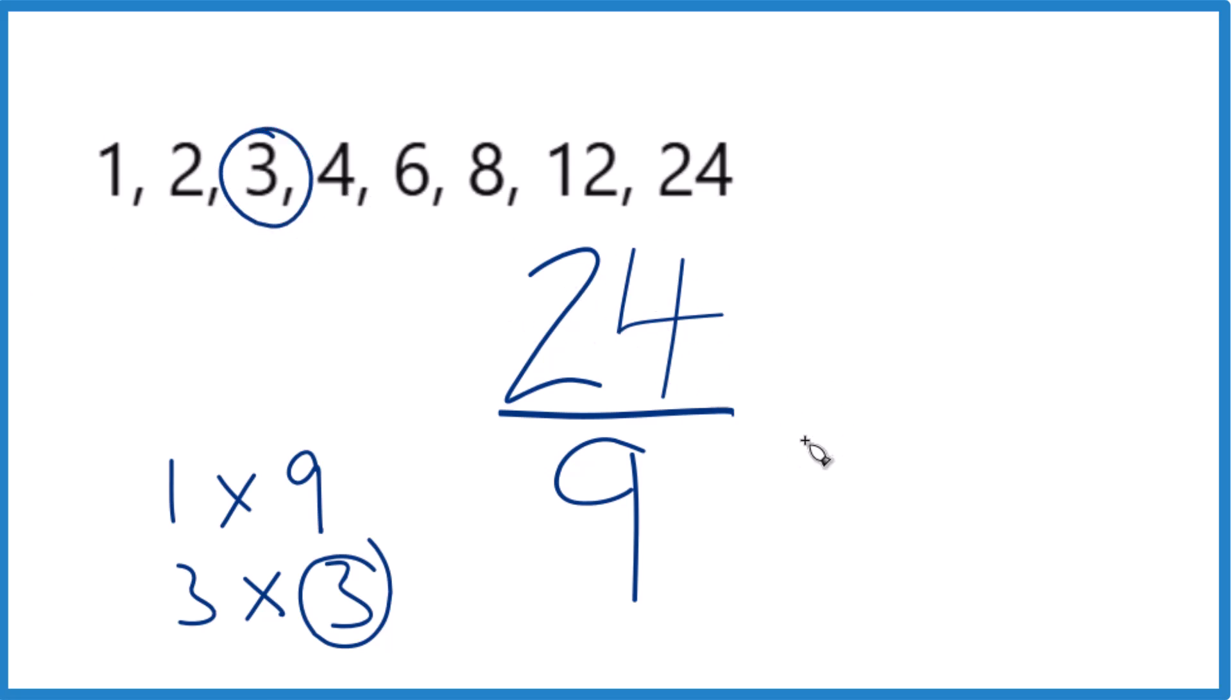So if you divide 24 by 3, you get 8. 8 times 3 is 24. If you divide 9 by 3, you get 3. So when we simplify 24 ninths, we get 8 thirds, and we can't reduce this any further.